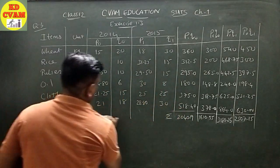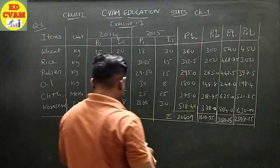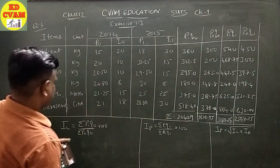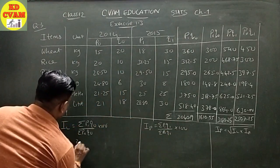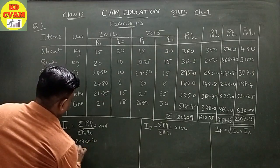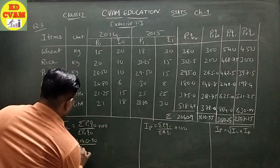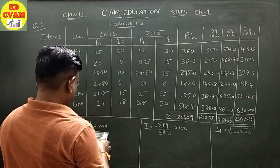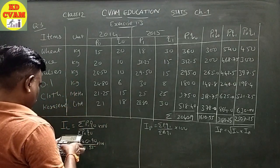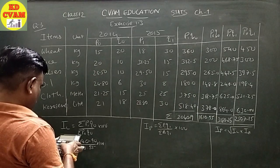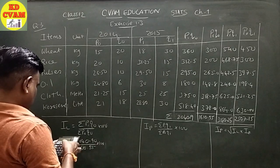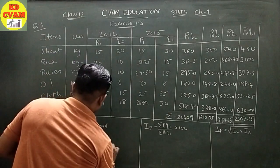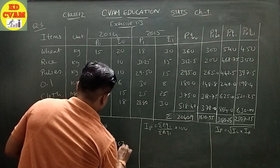Now we use these values in the formulas. For Laspeyres: IL equals P1Q0 upon P0Q0 into 100, which is 2040.90 upon 1610.55 into 100. This equals 126.72. For Paasche's: IP equals P1Q1 upon P0Q1 into 100, which is 3180.25 upon 2507.15 into 100, giving 126.85.